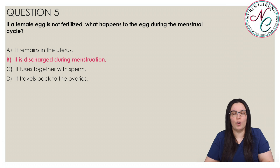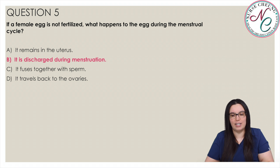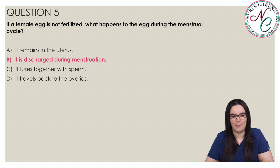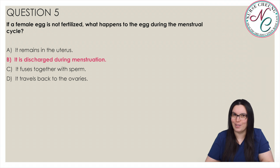If an egg or ovum is not fertilized, then it is discharged during menstruation. If the egg is fertilized, it is fused with the sperm and remains in the uterus to develop during pregnancy. The egg does not travel back up to the ovaries.